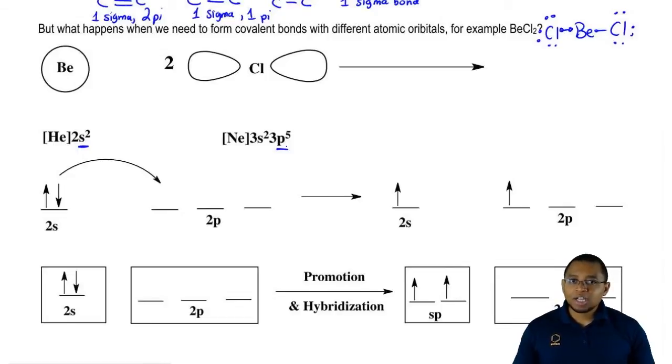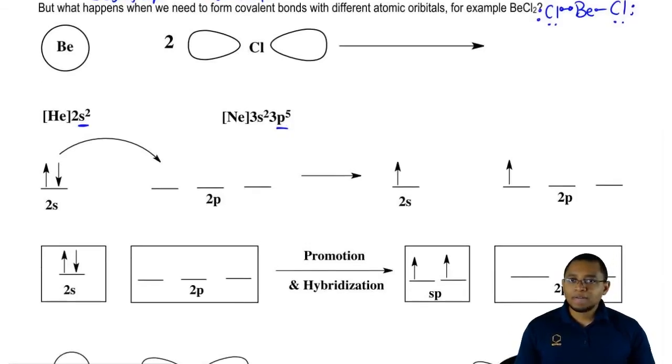This is where hybridization comes into play. Hybridization is a way of us mixing our s, our p, and sometimes our d orbitals together to make a hybrid orbital. That hybrid orbital will have a little bit of s character, p character, and d character.